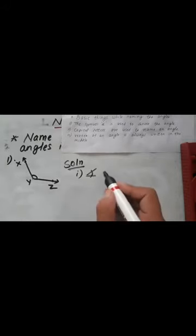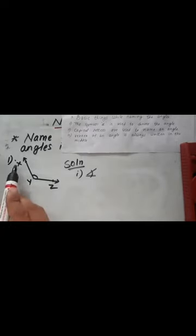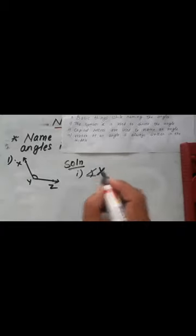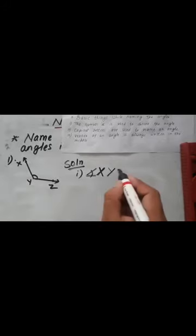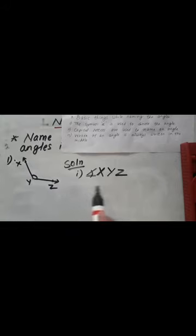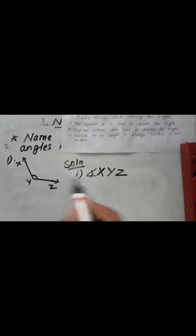So Y must lie in the middle. It means we have to keep either X first or Z first. Let's write: angle XYZ. This is the name of this angle — angle XYZ. You should keep the symbol of angle, all the letters should be in capital, and the vertex must lie in the middle.